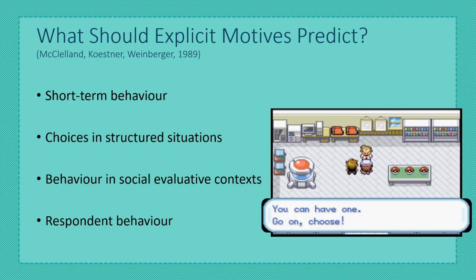Because explicit motives are conscious and the result of self-reflection, they are assumed to predict only specific types of behavior. You could think of them as New Year's resolutions. When individuals think about their own motivations, they are likely influenced by their goals and values and may describe what they wish to do or achieve, which will likely influence their short-term choices but does not always lead to lasting long-term behavior.